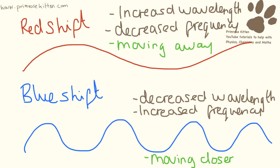If a star is blue shifted, it is moving closer to us. The light is going to be shifted towards the blue end of the spectrum. You're going to see a decreased wavelength and an increased frequency.